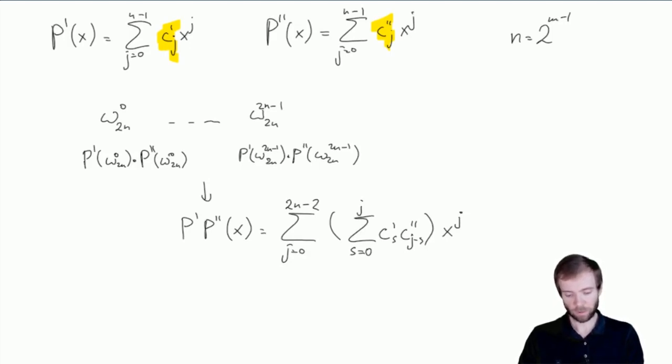So when we have two sequences of c'_j and c''_j, computing the sum where the index of the first sequence runs in forward direction and the index of the second sequence runs backwards, this is called a convolution of the two sequences.